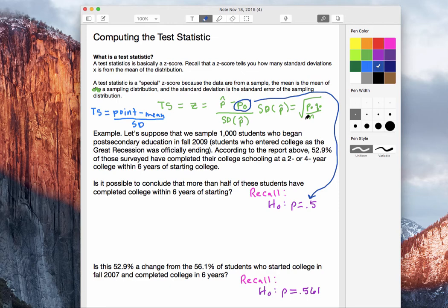So let's look at these three examples again about those completion rates within six years of college. So from this survey of 1,000 students, we want to compare the sample proportion of 52.9% and see if we can really say that more than half of these students have completed college within six years. So recall from one of the previous videos, our null hypothesis is that the proportion of the population equals half. We only need the null hypothesis because that's our fixed mean. That's going to be the mean that's right there in that test statistic formula.